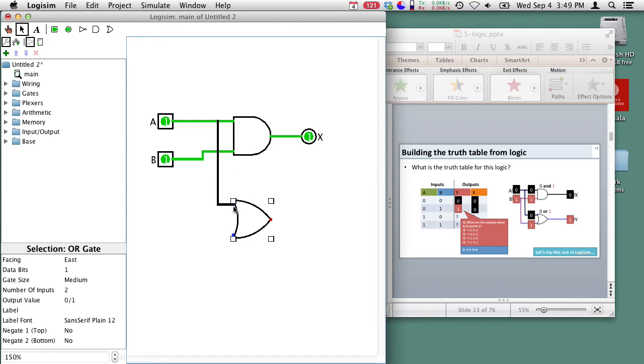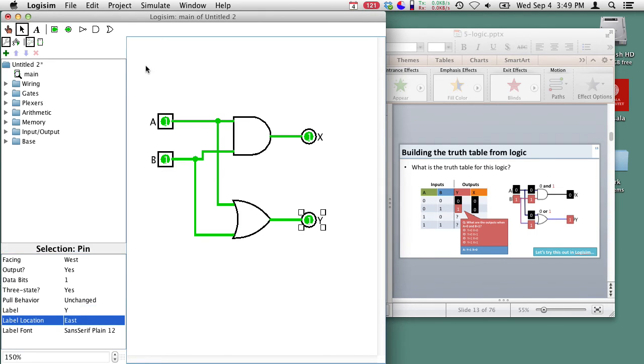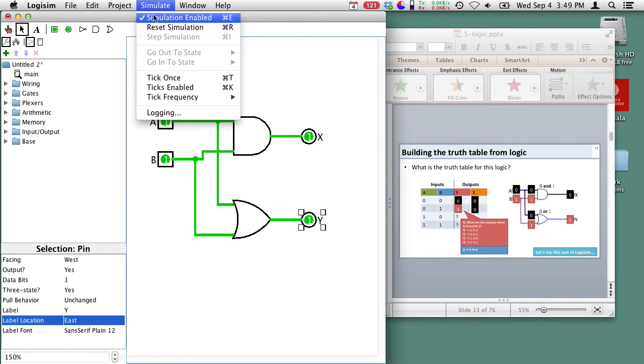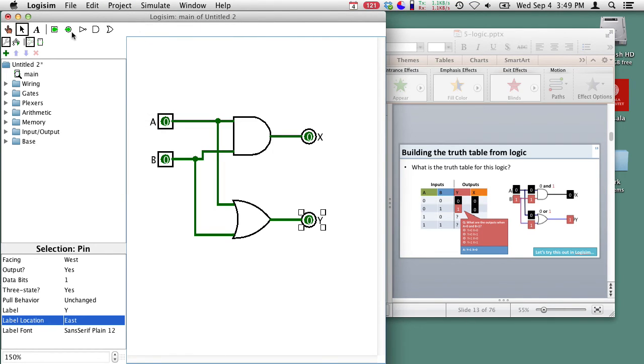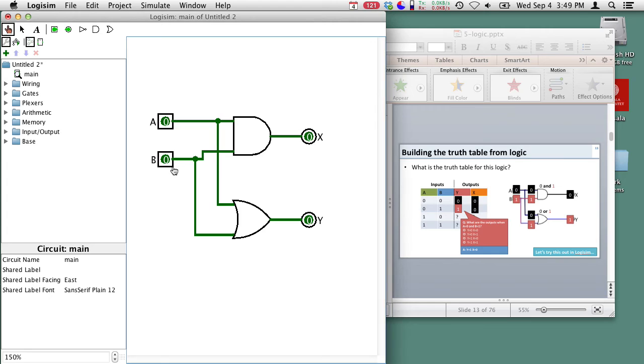The first input to the OR gate is going to be A, and the second input to the OR gate is going to be B. Then we need an output from the OR gate here. The output for the OR gate here is going to be Y. Let's make sure that we're simulating, reset our simulation, and now we can try the different combinations.